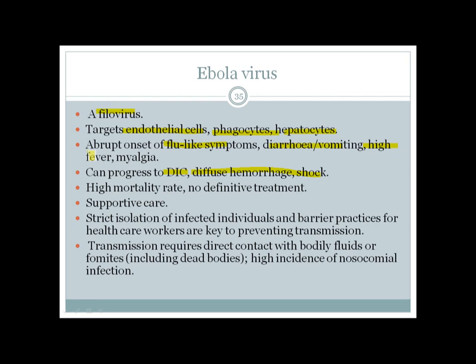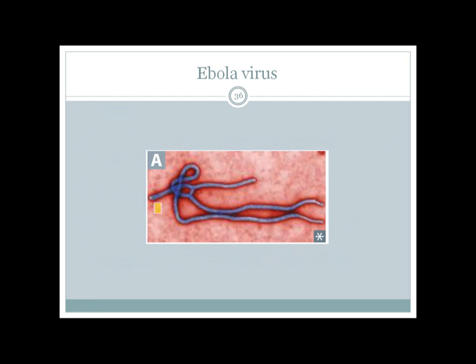The most important feature of Ebola is bleeding manifestations due to its being a hemorrhagic fever, giving it a high mortality rate. There is no definitive treatment — only supportive care with ventilation and volume support. To prevent transmission, strict isolation of infected individuals and barrier precautions for healthcare workers are required. Transmission requires direct contact with body fluids or fomites from dead bodies, and there is a very high risk of nosocomial infection.